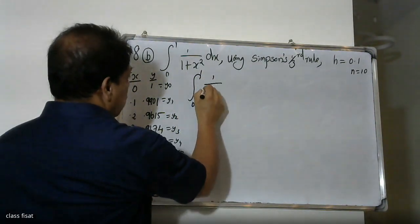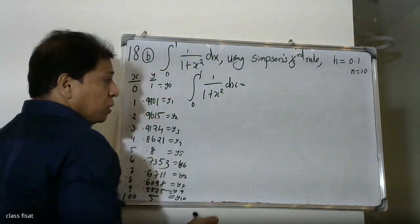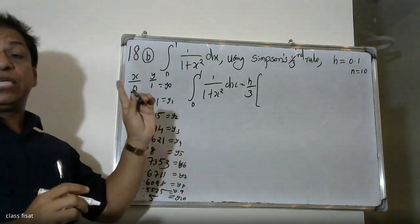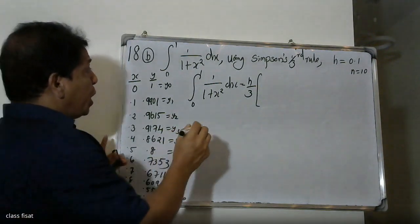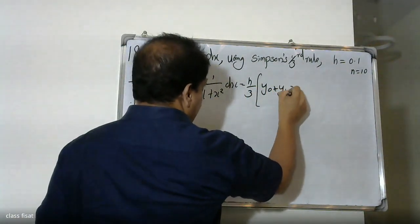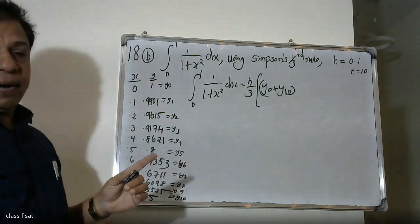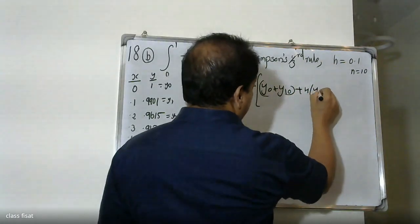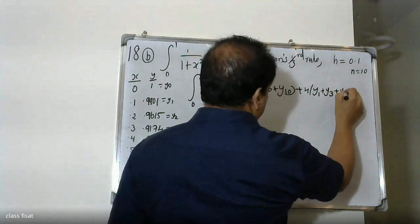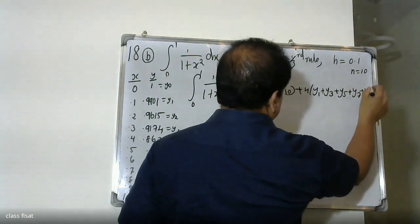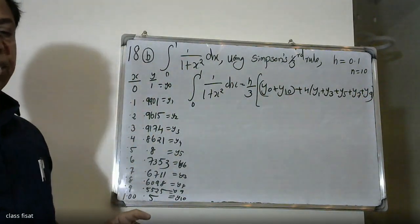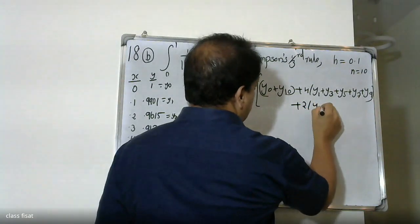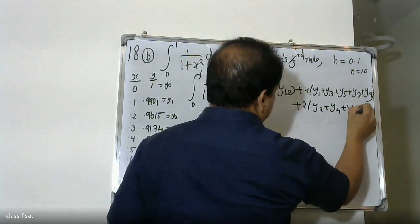The integral from 0 to 1 of 1/(1+x²) dx equals, by Simpson's one-third rule: h/3 into [y0 + y10 + 4 into (y1 + y3 + y5 + y7 + y9) + 2 into (y2 + y4 + y6 + y8)].